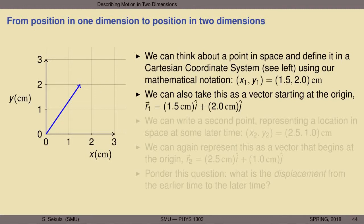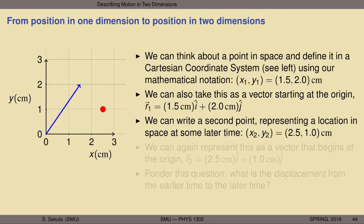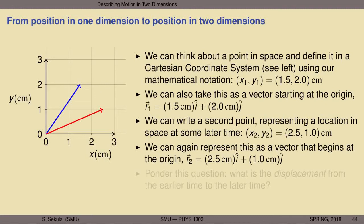Now we write a second point and represent the location of that point in space again using Cartesian coordinates. Let's imagine that this point represents the position of the same object at some later time — time 2 — and we denote this later location as x2 and y2. Reading off the graph, the object is now located at (2.5, 1) centimeters in x-y coordinates. We can again represent this as a vector drawn in red as an arrow, beginning at the origin with components taken directly from the coordinate location of the point.